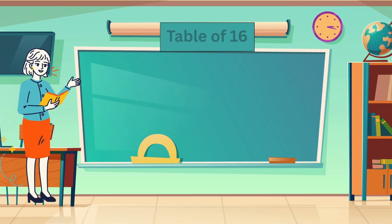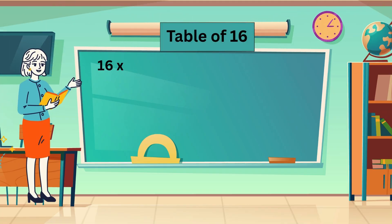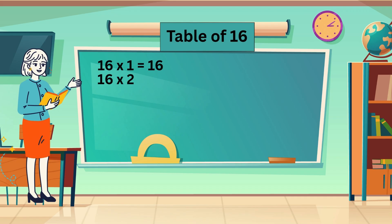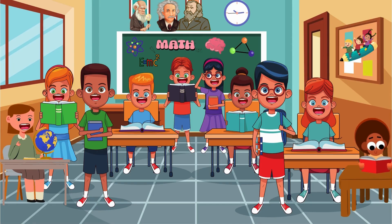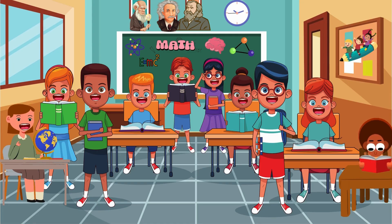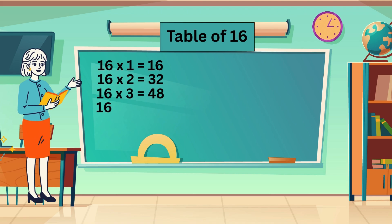Table of 16. 16 ones are 16. 16 twos are 32. 16 threes are 48. 16 fours are 64.